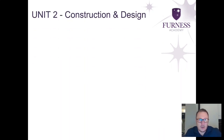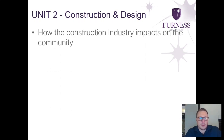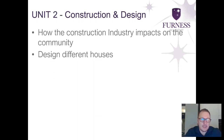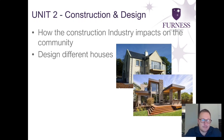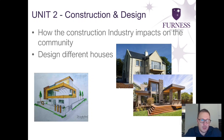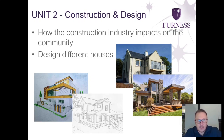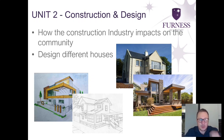Unit two is all about construction and design. You'll learn about the construction industry and its impact on the community, both at a local and national level. You'll also undertake a piece of coursework where you actually have to design four different houses. These designs will either be a traditional method design or a contemporary modern design, produced in the form of two-point and one-point perspective drawings. After a consultation between your teacher and yourself, you will then produce one final design.